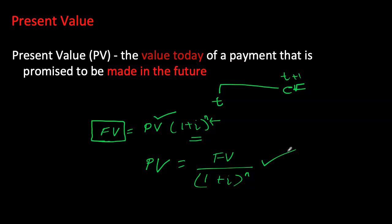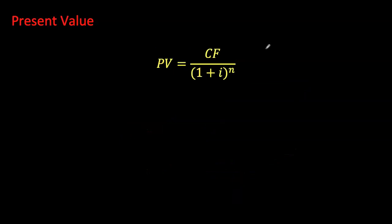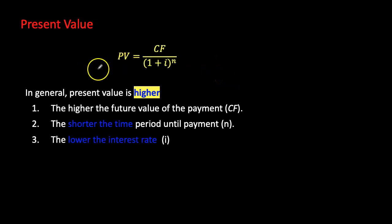This formula tells us that to find the value today of a future payment, we discount it at some interest rate. The interest rate represents your opportunity cost of waiting — the higher the opportunity cost, the higher the rate at which you discount the future cash flow, and the lower its present value today. Lower opportunity cost means a lower discount rate and higher present value.